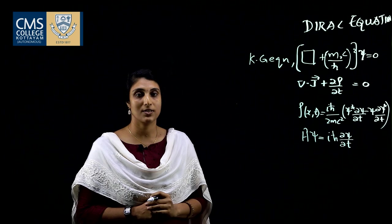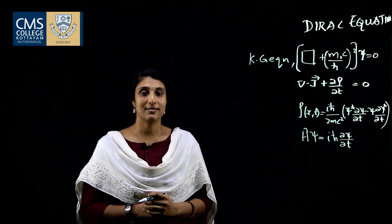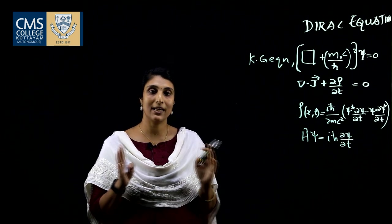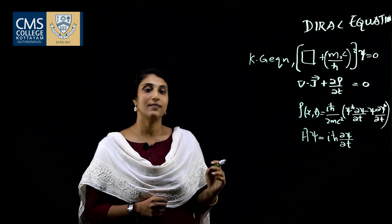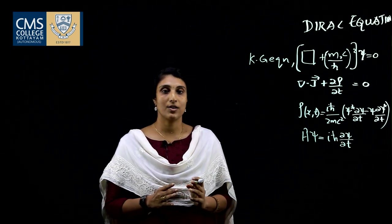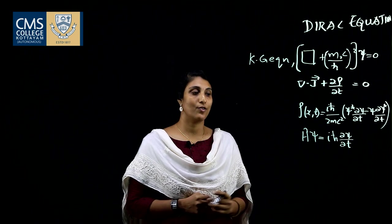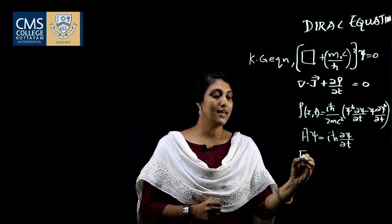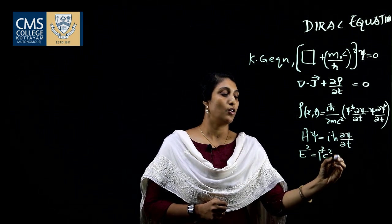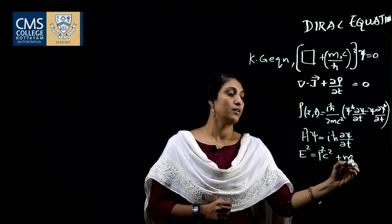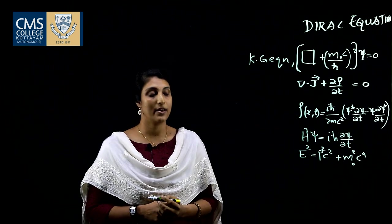Dirac therefore proceeded to establish the existence of a Hamiltonian operator which should be linear in the momentum components. It means that a relativistic wave equation should be linear in the spatial differential operator as well as ∂/∂t, so the equation explicitly preserves the symmetry between space and time. By special relativity, the energy-momentum relation for a free particle of rest mass m₀ is E² = p²c² + m₀²c⁴.